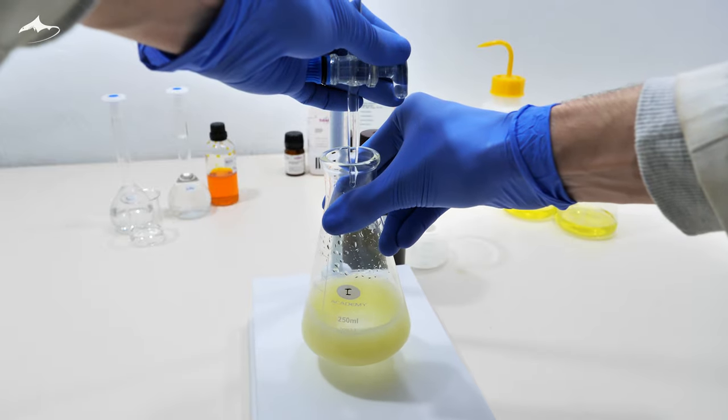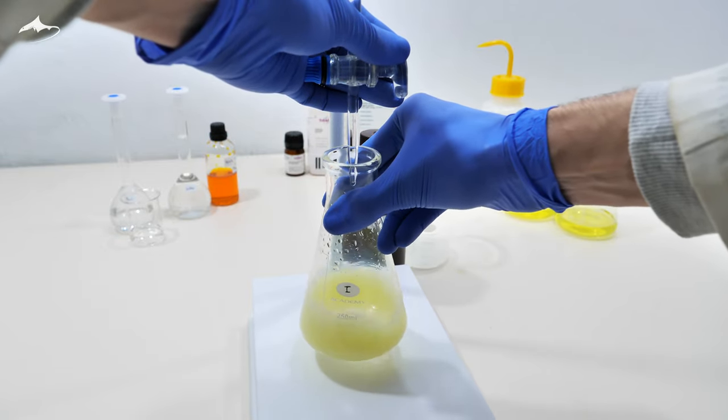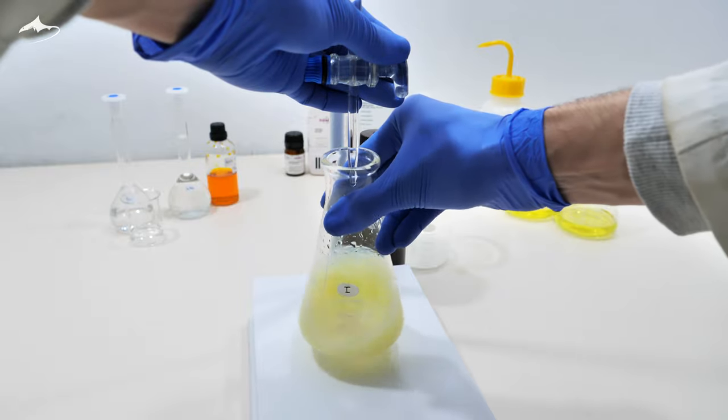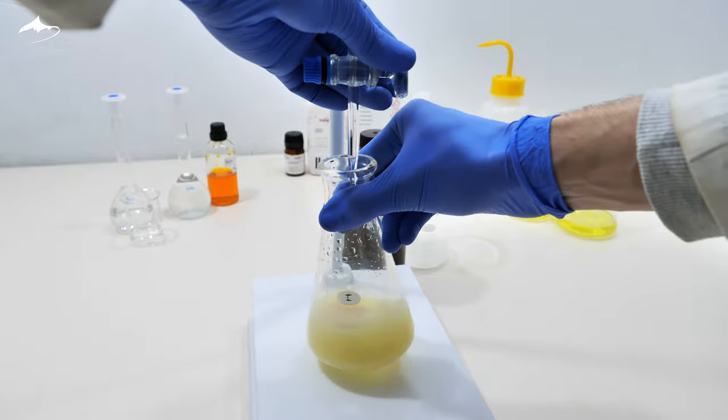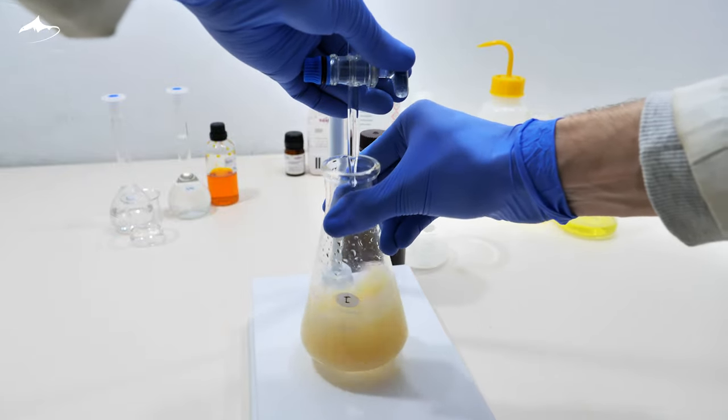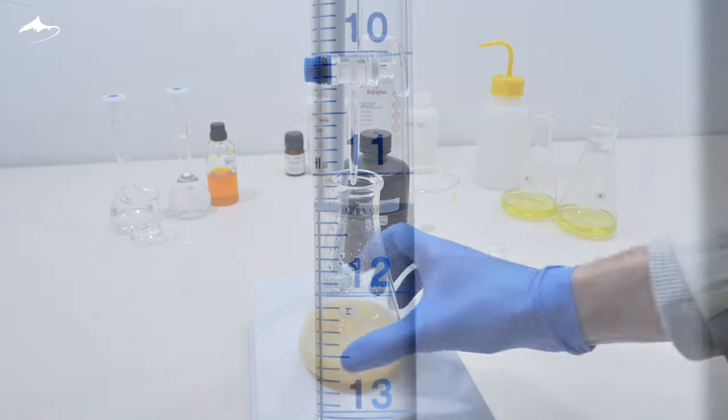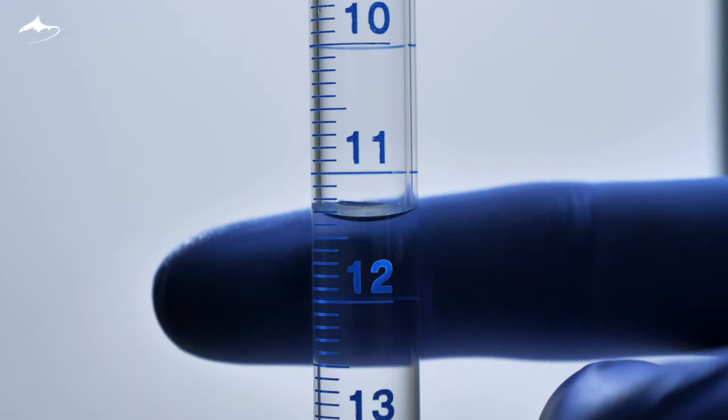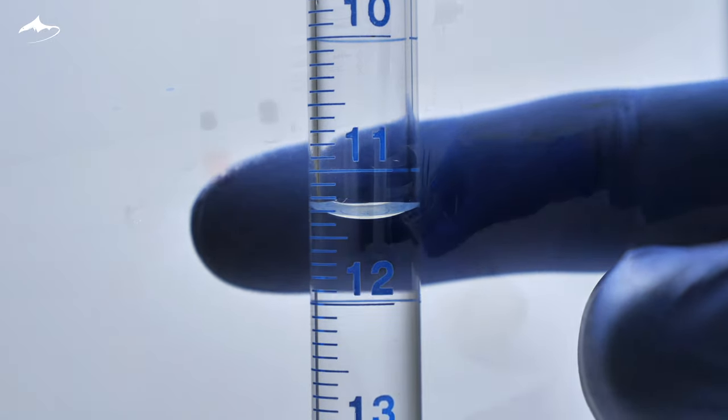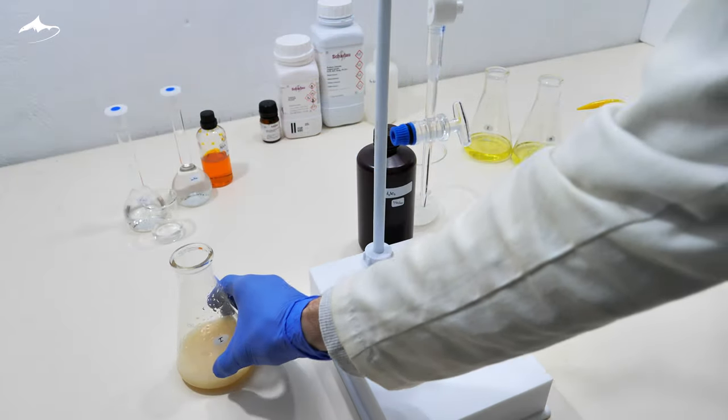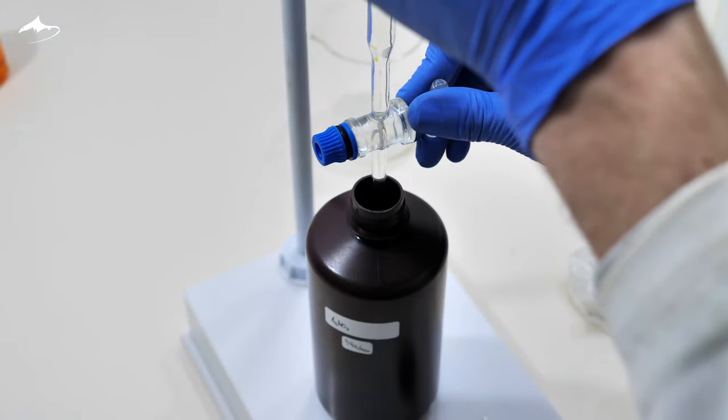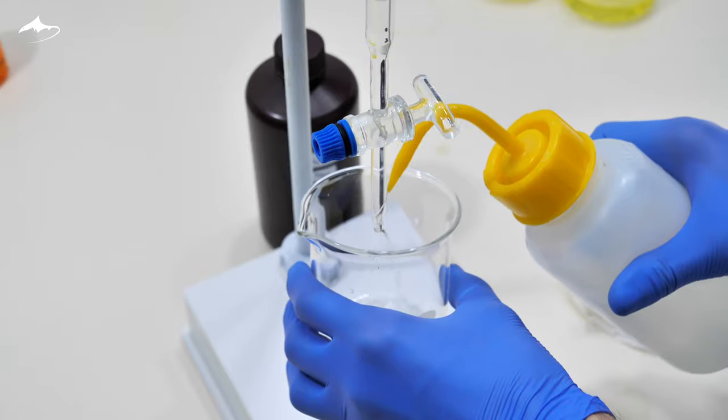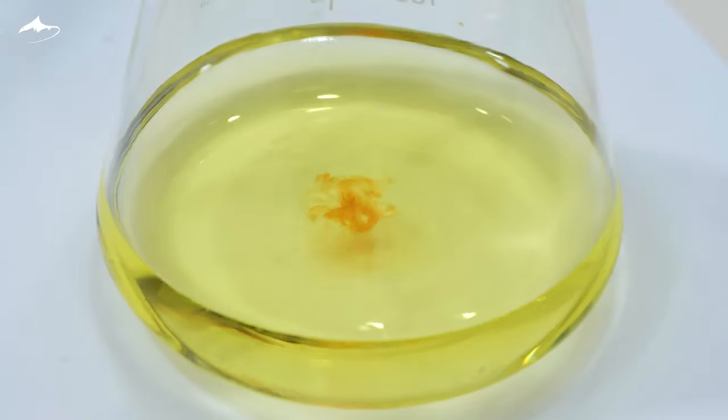Near the endpoint, additions are slowed to one drop at a time. And here is the endpoint. I added an extra drop by mistake, which is still okay since there are two more aliquots to titrate. In total, 11.4 milliliters are used. The value is recorded on paper and the process is repeated for the rest of the aliquots. Here you can see the formation of silver chloride after the red color disappears.